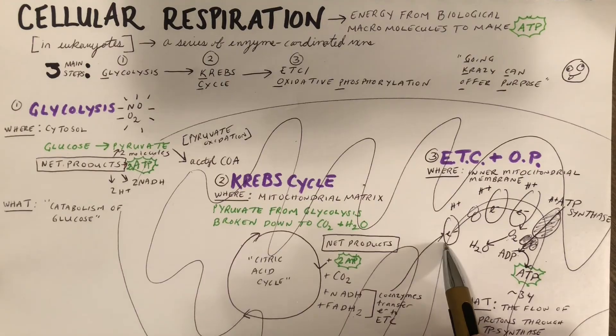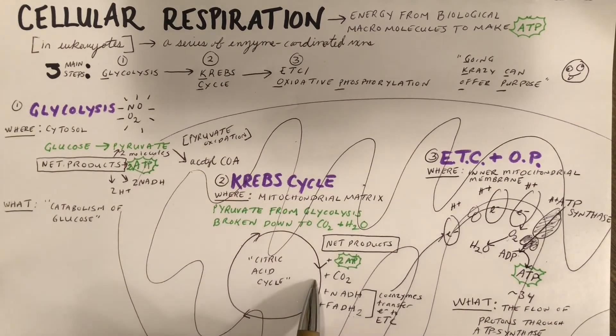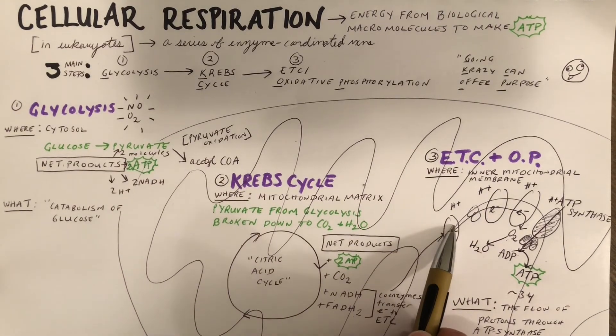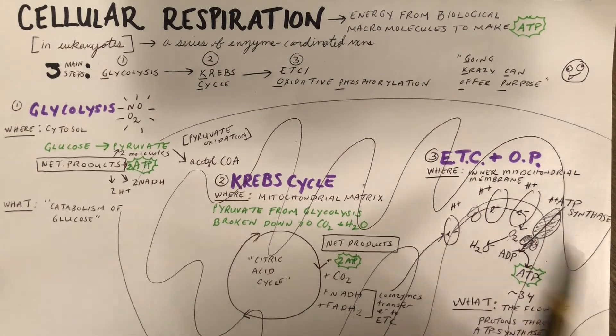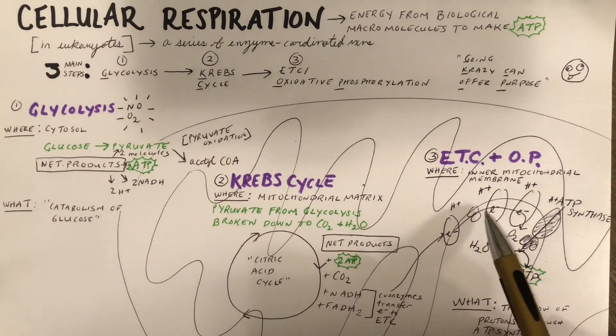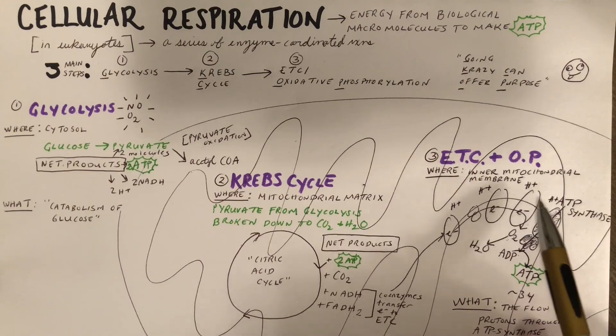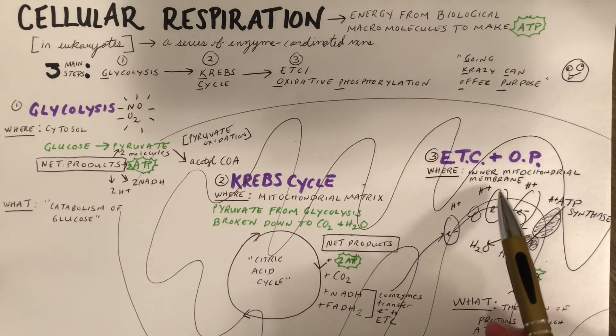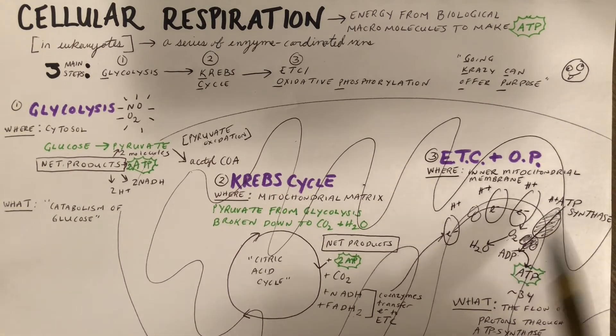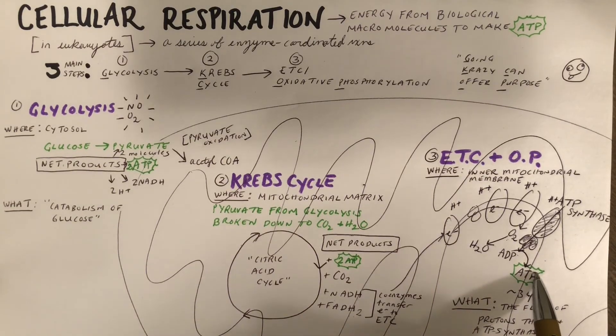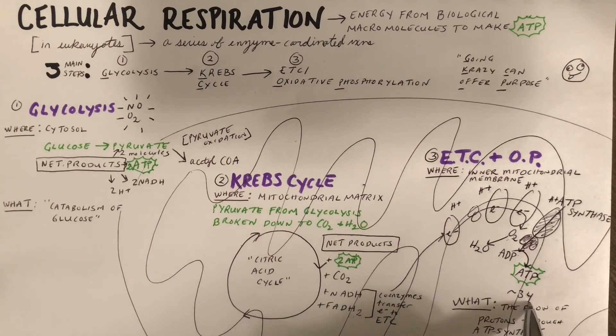All the electrons extracted during glycolysis and the Krebs cycle are transferred by NADH and FADH2 into the electron transport chain that occurs across the inner mitochondrial membrane. As these electrons are transferred between our different reactions, we'll establish a gradient of protons. This will then help ATP synthase generate ATP from ADP through oxidative phosphorylation. This will generate a lot of ATP.